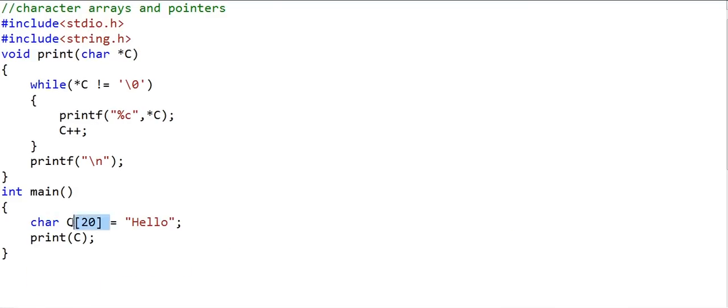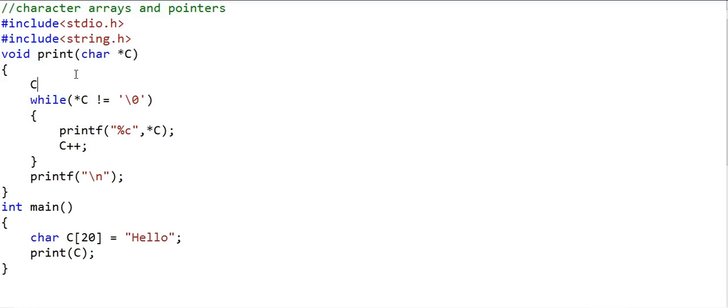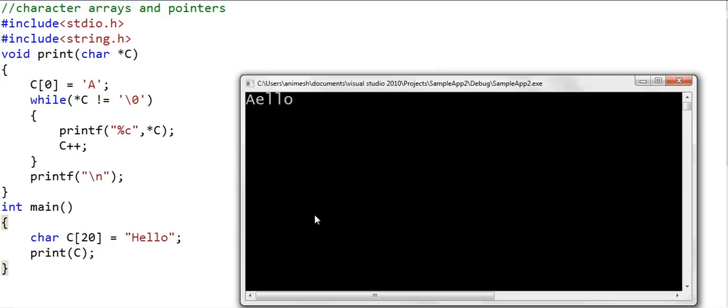Coming back to having a character array. Now if we have a character array and we are passing the address of the array to a function, that function receives it in a character pointer. Now using this pointer, we can modify the data in this particular array. So if I say something like this, we first change the first character to A and then we are printing the characters, and then as you can see, it is possible to do so.